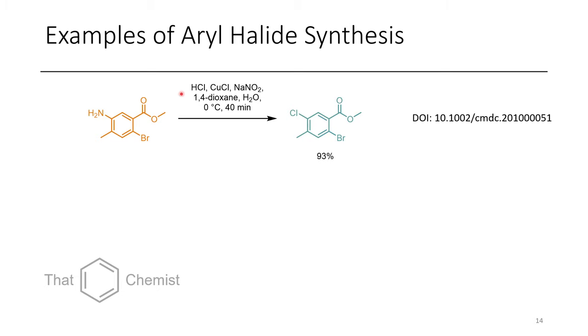Now in this example, they use HCl, copper chloride, in 1,4-dioxane and water, and all in one pot, both steps occur, where the chloride is just displaced, or the chloride displaces the diazonium rather.